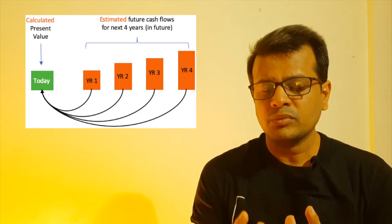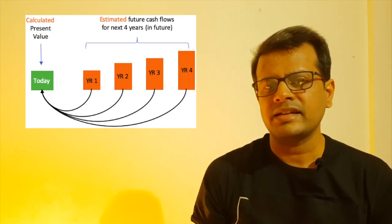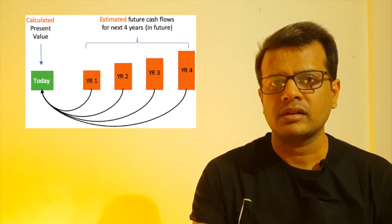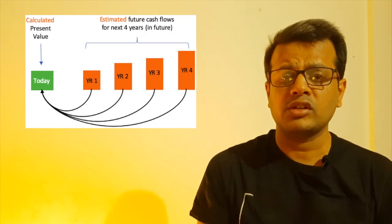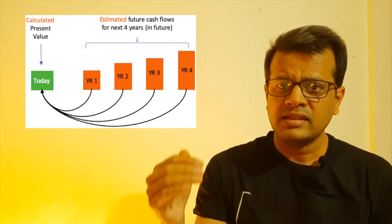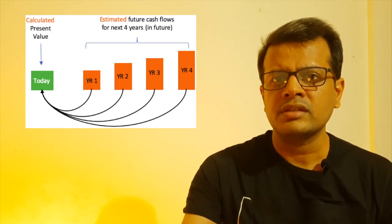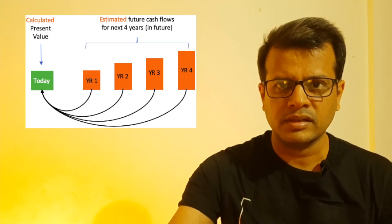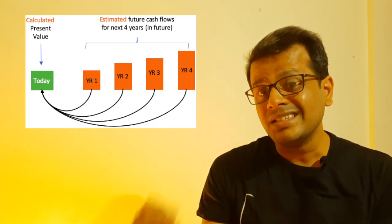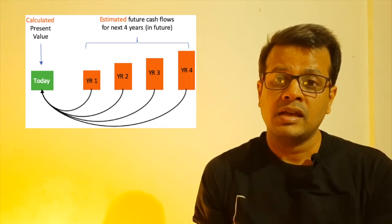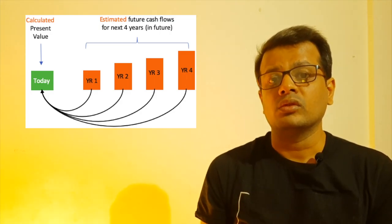Now let me give you another example. Suppose you have bought a stock which pays dividends — say 3 rupees per share in the next year. The same dividend is going to grow and become 3.1 rupees in the second year, 3.2 rupees in the third year, 4 rupees in the fourth year, and 4.1 rupees in the fifth year. So based on the dividends this stock is going to give you in future years, you can estimate its present value based on this income it is going to generate.